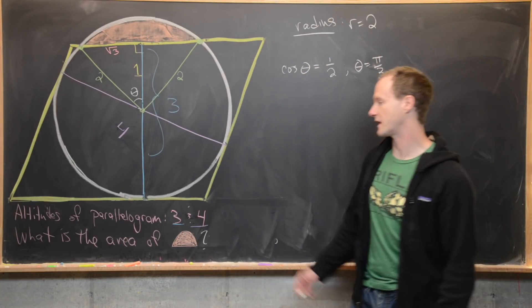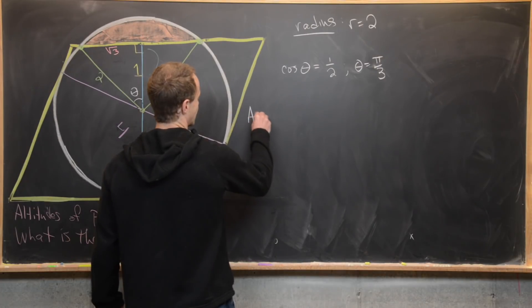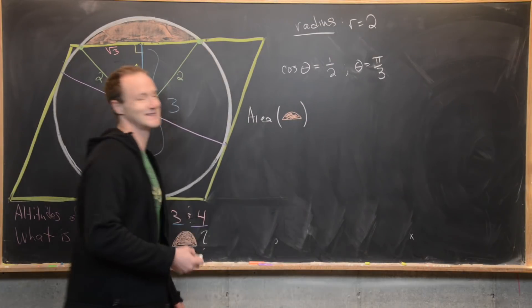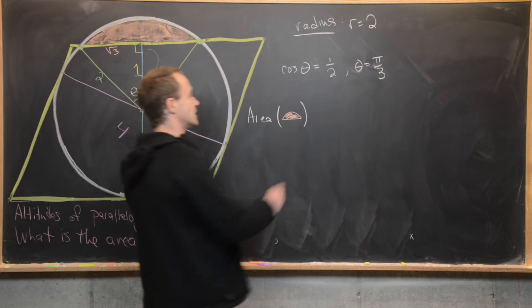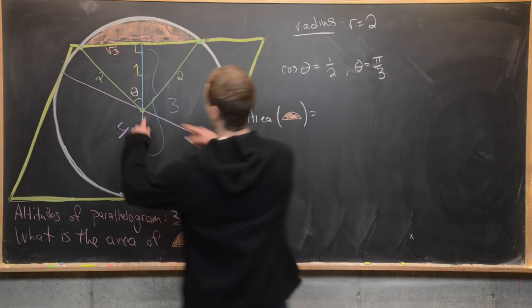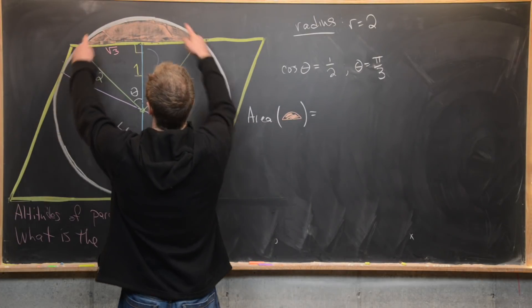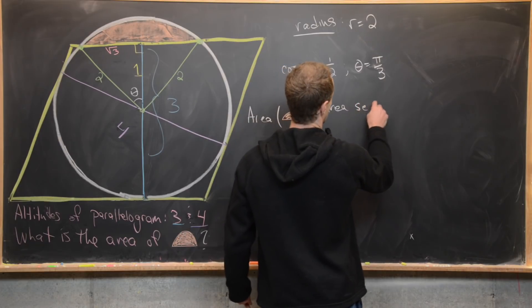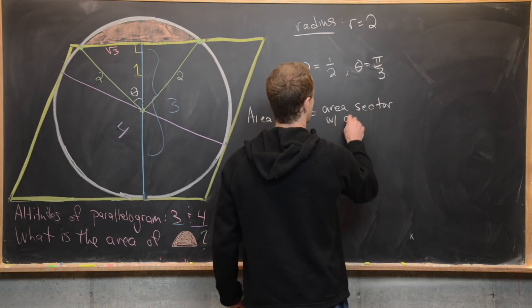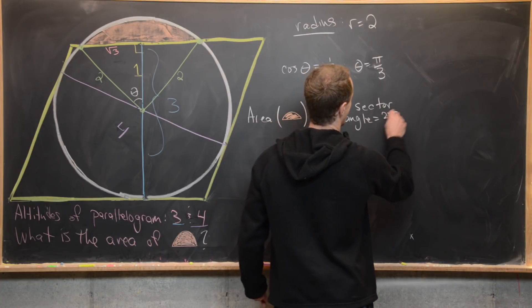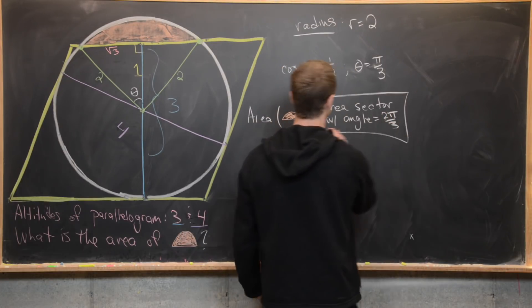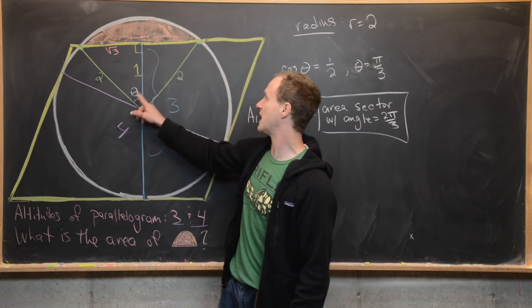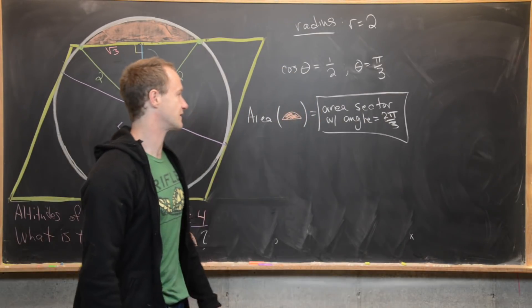And now we're ready to calculate our area. So maybe we'll write it like this: area of this region, which this region is also known as a segment of a circle. So that's going to be equal to—well, we can think about this as the area of the sector of the circle. So let's write it like this: area of the sector with angle equal to two pi over three. So why is it two pi over three instead of pi over three? Because we have twice theta here, defining this whole sector of the circle.